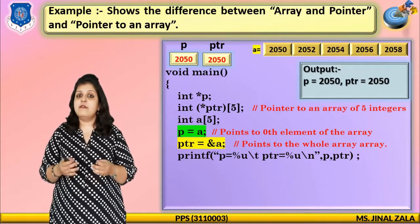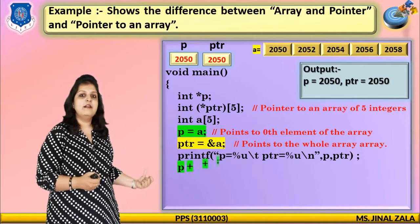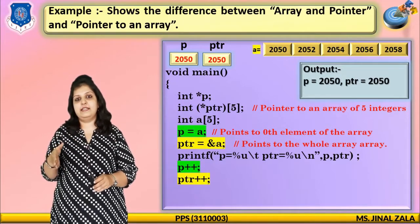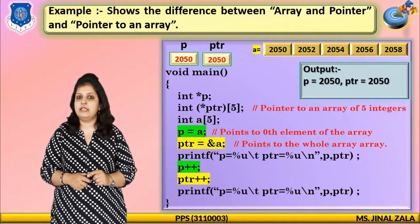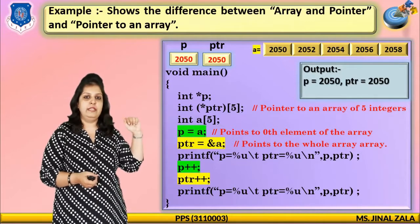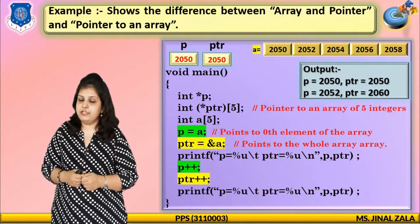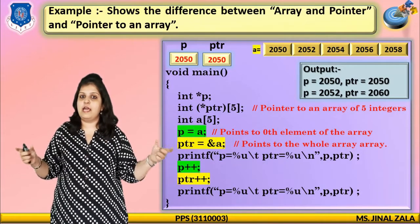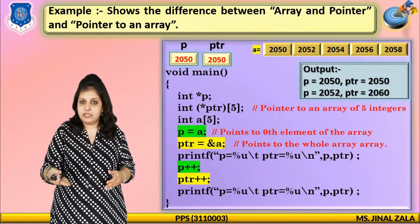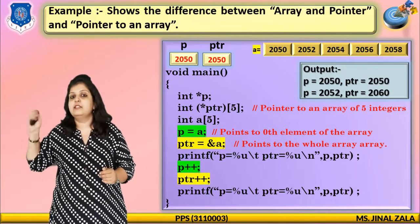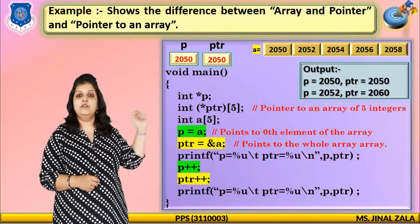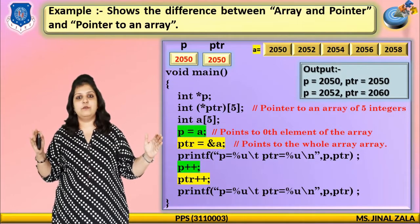Now you can see the difference when we increment both pointers. Write P plus plus and PTR plus plus. When pointer P is incremented, it moves to the next address at A[1], which is 2052. But PTR points to the whole array, treating addresses 2050 to 2058 as a single unit. When PTR is incremented, it jumps to the next location after the entire array, which is 2060. This shows the key difference between array and pointer concept versus pointer to an array concept.